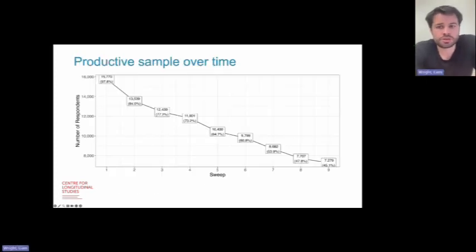As with any longitudinal study, participation in Next Steps has decreased over time. 7,279 individuals were productive at the latest sweep, approximately 45% of the total recruited sample. For the first seven sweeps, the study predominantly tracked only those who had responded in the prior sweep and responses in these sweeps were largely monotonic.